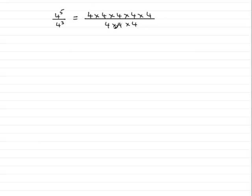Now we can simplify this because we can divide both top and bottom by 4. So 4 into 4 goes 1, and 4 into 4 goes 1 there. We could repeat this for the next pair — 4 into 4 goes 1, 4 into 4 goes 1. And similarly again we could repeat this for the third pair.